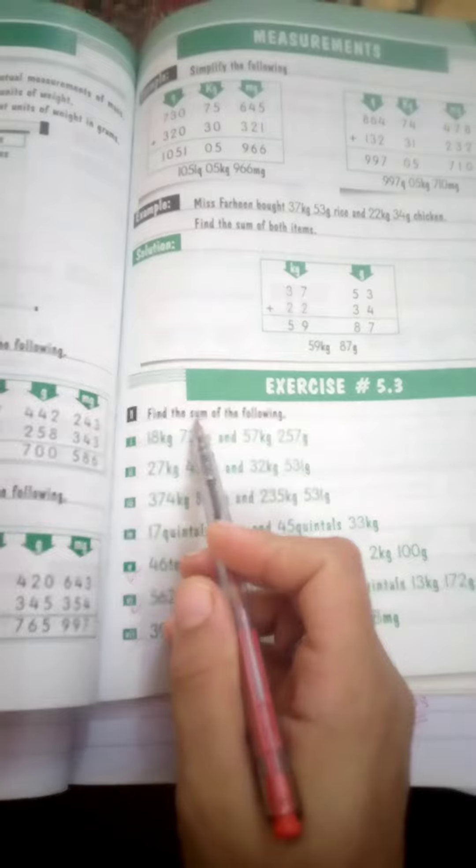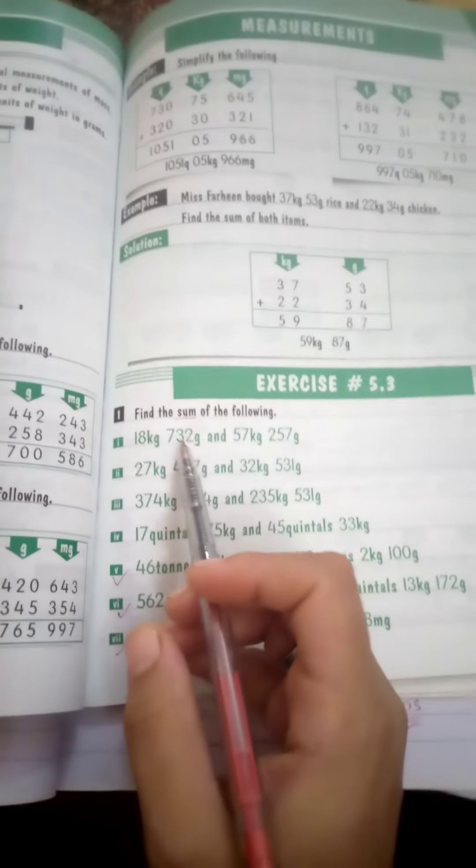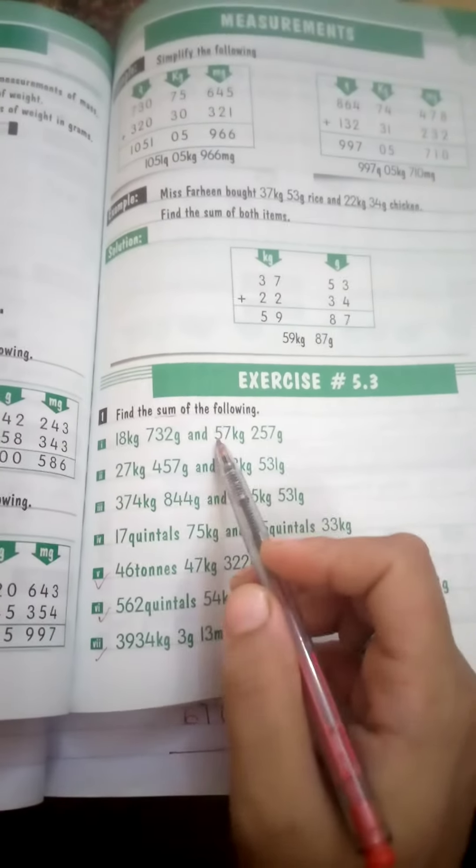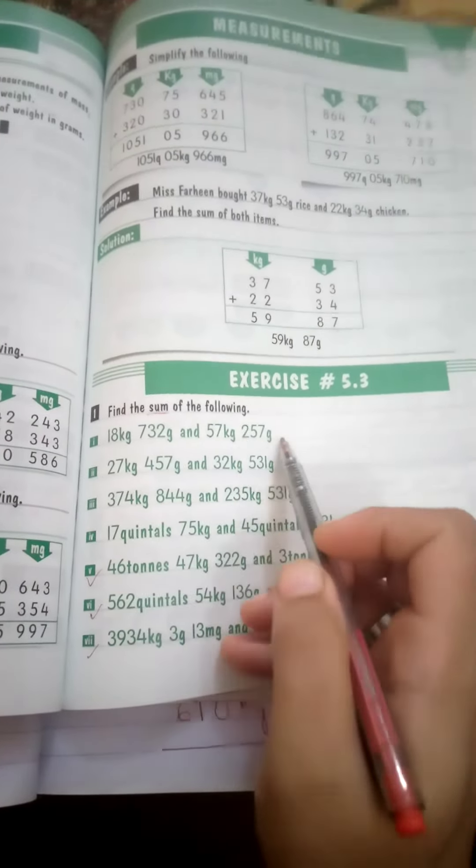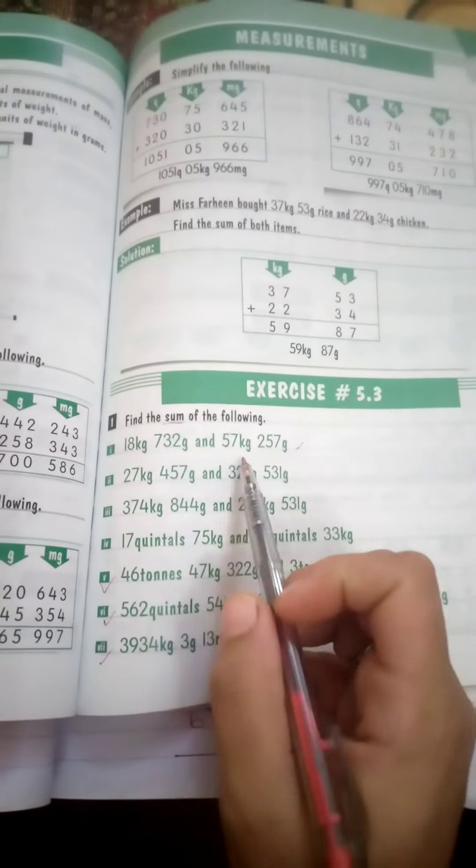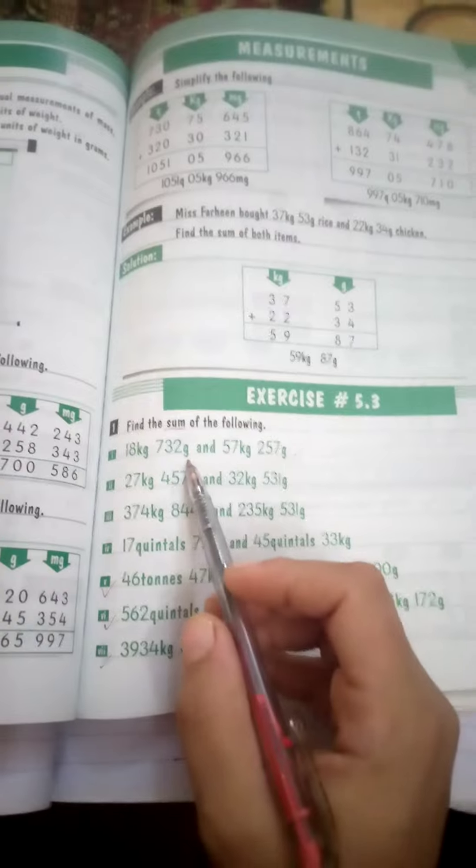Question number 1 is 18 kg 732 grams and 57 kg 257 grams. We have to add these. Kg and grams are the units of measurement.